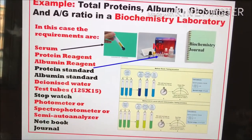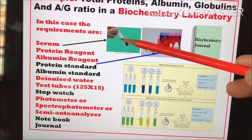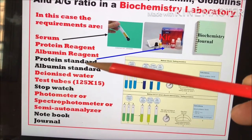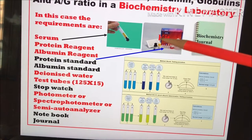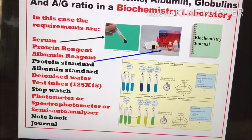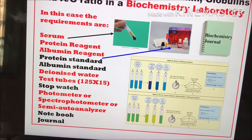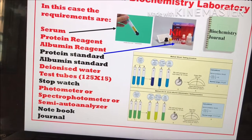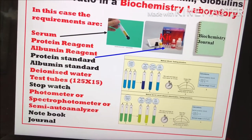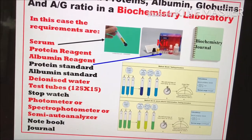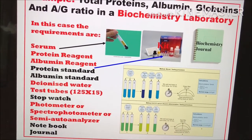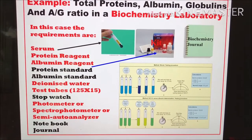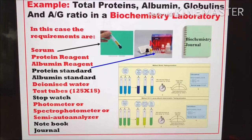In this case, the specific requirements are serum sample, protein reagent, albumin reagent, protein standard and albumin standard in this kit. Then deionized water, test tubes of size 125 x 15 mm, stopwatch, photometer or spectrophotometer or semi-auto analyzer, notebook and journal. All these requirements are necessary to perform this experiment.